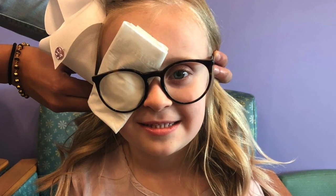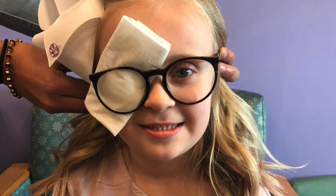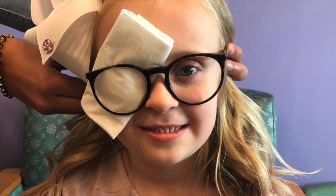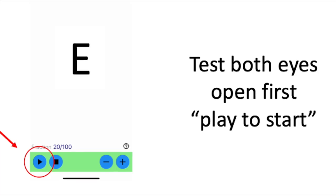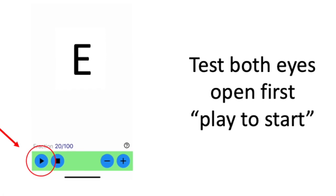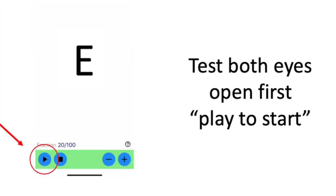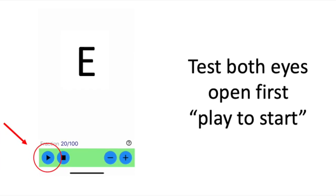If your child wears glasses, you can occlude one eye with a folded tissue. You will start by testing both eyes open first.